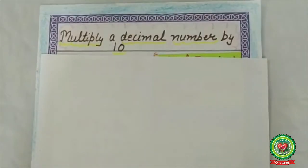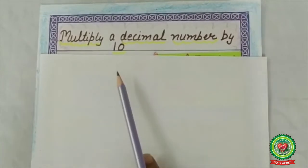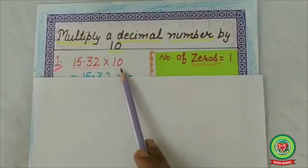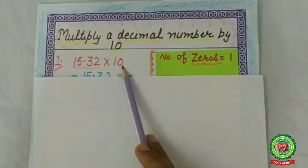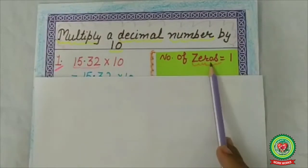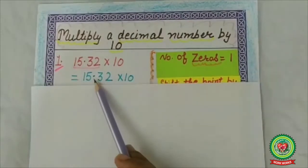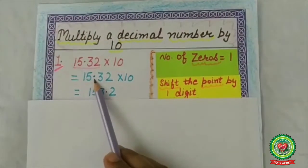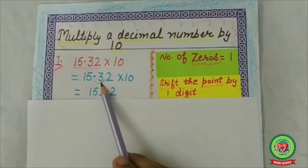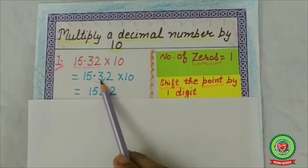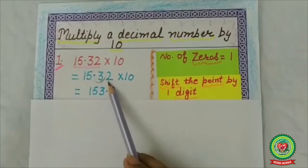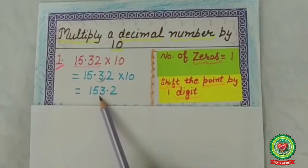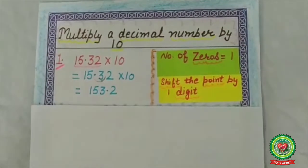Today we will start with multiplying a decimal number by 10, 100, and 1000, and also by a whole number. First example: 15.32 multiplied by 10. Step 1: count the number of zeros — it is 1. So shift the point to the right by one digit. The point shifts from between 5 and 3, moving one place to the right, and comes between 3 and 2. So the answer is 153.2.